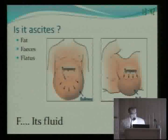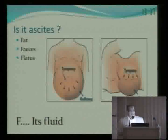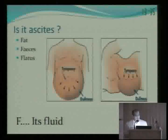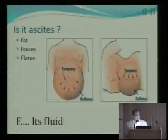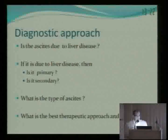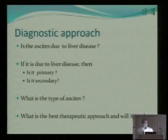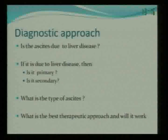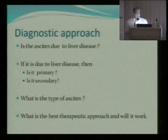Is it ascites? We first think about fat, because obesity is a growing problem and non-alcoholic fatty liver disease is a growing problem — you have to exclude it. We also see children with intestinal obstructions and dysmotility problems who may have abdominal distension. Then you utter the four-letter word and say it's fluid. What do I do now? You start to ask: is this due to liver disease? That's the first question to answer, and then you proceed along the lines of investigation.